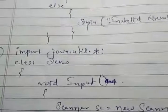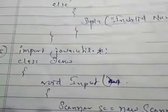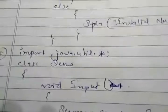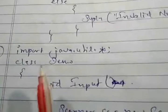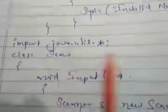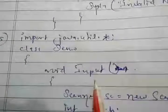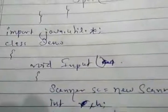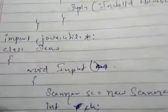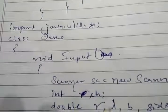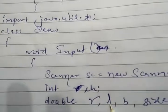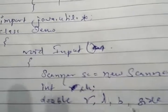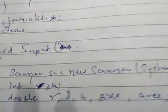We require a Scanner class for that, so we are importing the package: import java.util.*. In the void input function, Scanner sc = new Scanner. We declare ch for choice, r for radius, l for length, b for breadth, side, and area for calculating.